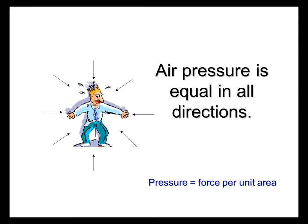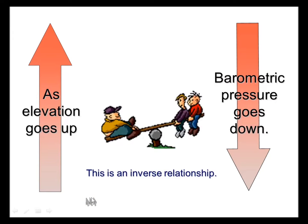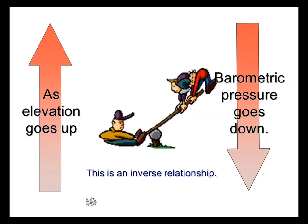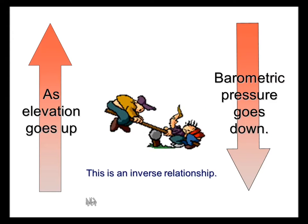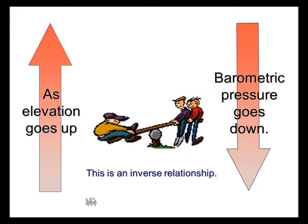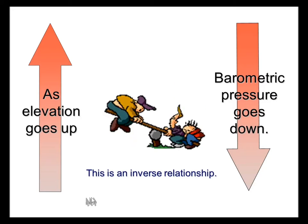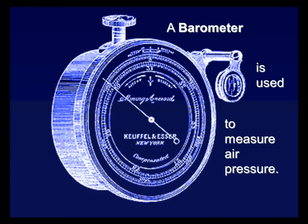As the elevation goes up, the barometric pressure goes down — it's an inverse relationship. The reason is that there are fewer gas particles pushing on you. This is how we measure pressure: it's called a barometer.